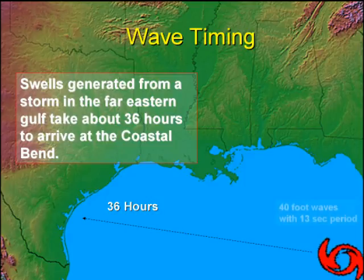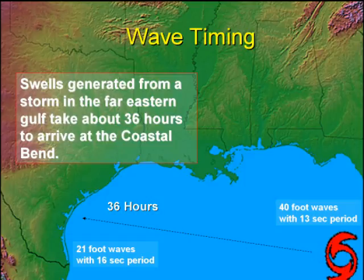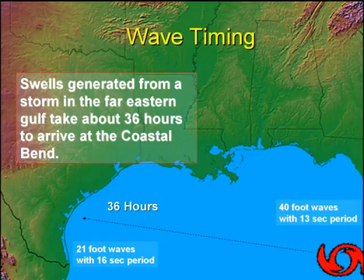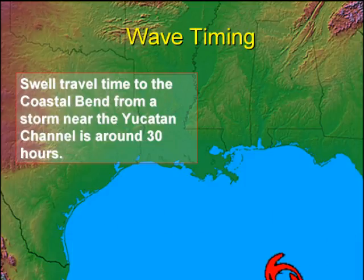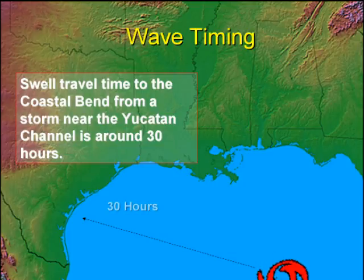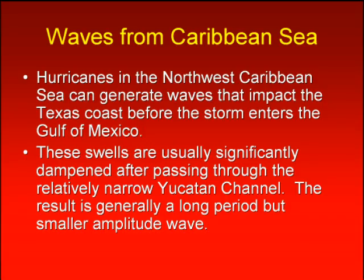So if a hurricane produced 40 foot waves with 13 second periods in the eastern Gulf, it would decay to 21 foot waves with 16 second periods in the western Gulf. A storm located near the Yucatan channel would take about 30 hours for the waves to propagate to the Texas coast. Hurricanes in the Northwest Caribbean Sea can generate waves that impact the Texas coast before the storm even enters the Gulf of Mexico.